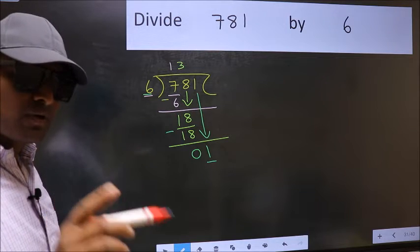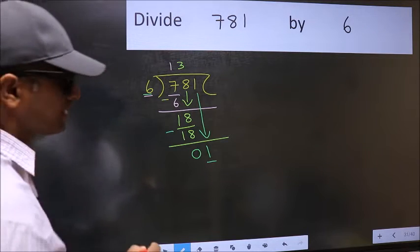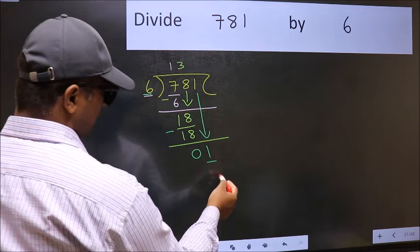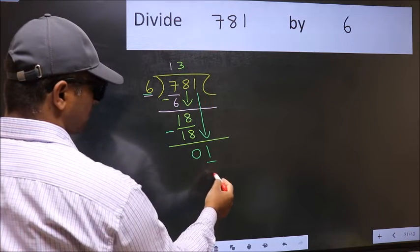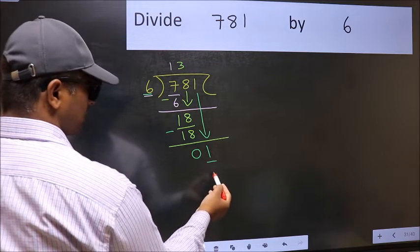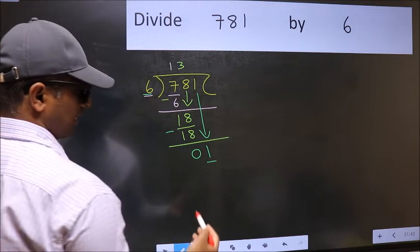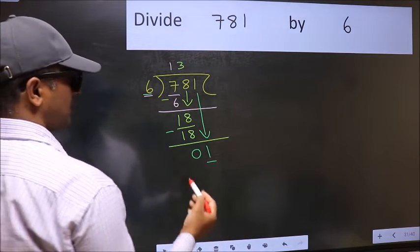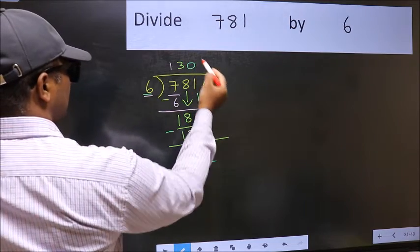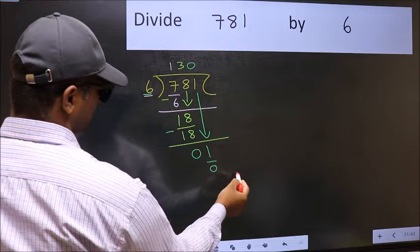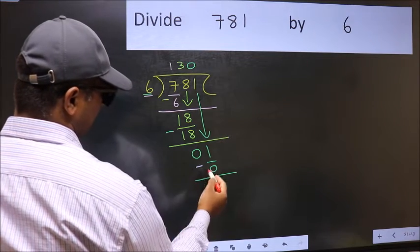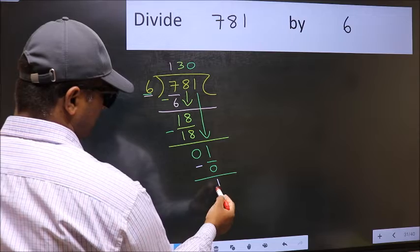Instead, what you should think of doing is: what number should we write here? If I take 1, we will get 6, but 6 is larger than 1. So what we should do is take 0. So 6 times 0 equals 0. Now you should subtract: 1 minus 0 equals 1.